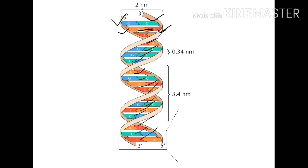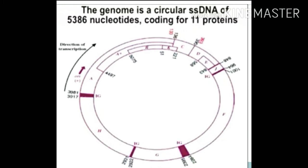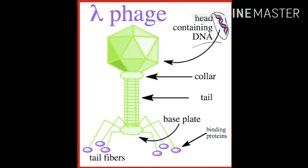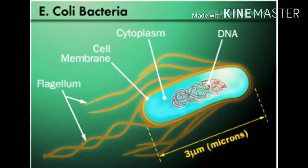For examples: bacteriophage φX174 consists of DNA of 5,386 nucleotides. Bacteriophage lambda consists of DNA which has 48,502 base pairs. The gram-negative bacterium Escherichia coli contains DNA of 4.6 × 10⁶ base pairs — so its DNA is very long.